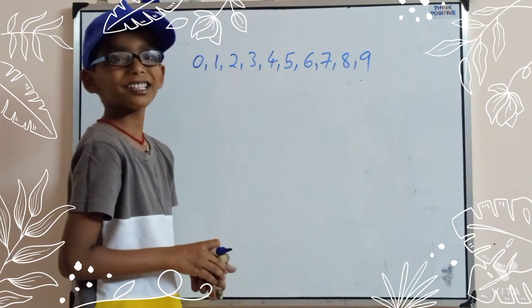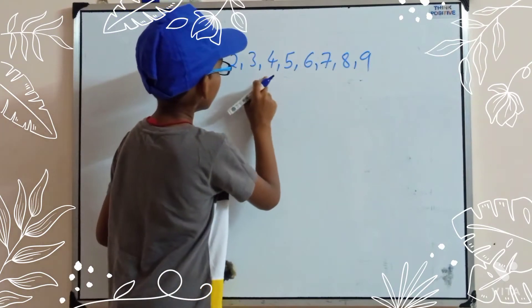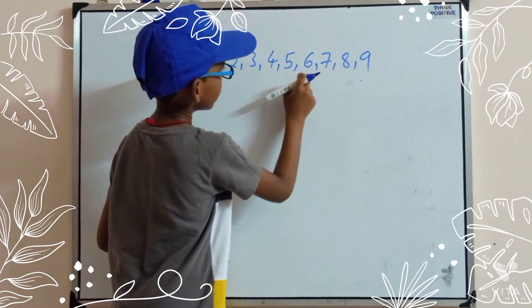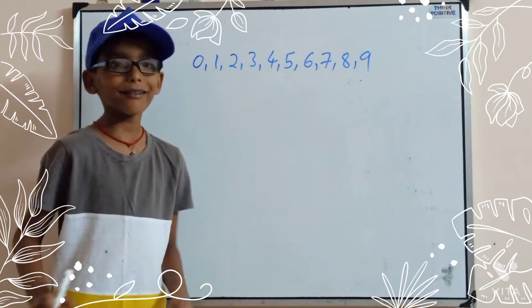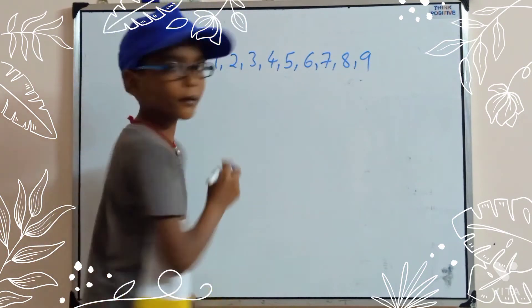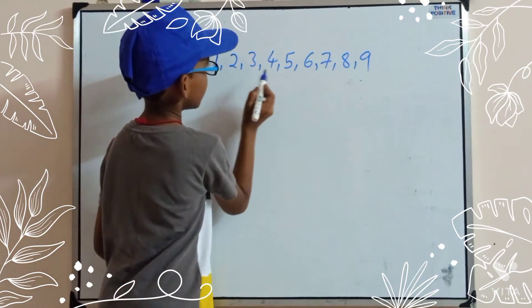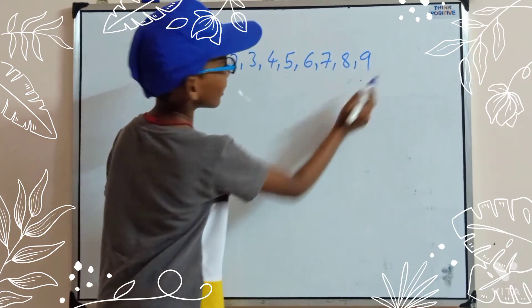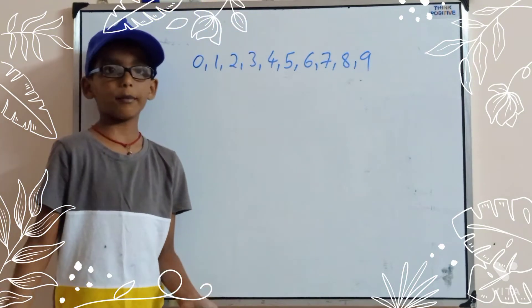Then here even numbers are 0, 2, 4, 6, 8. Odd numbers are 1, 3, 5, 7, 9.